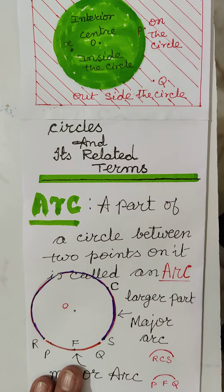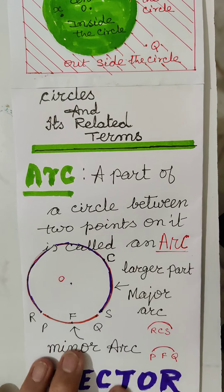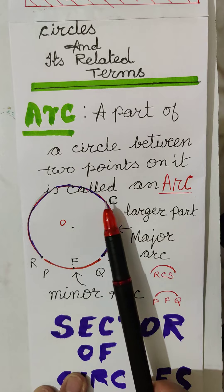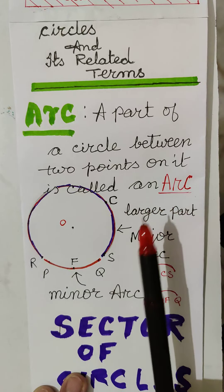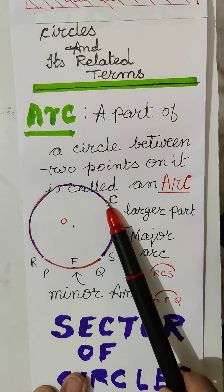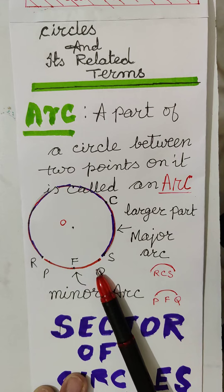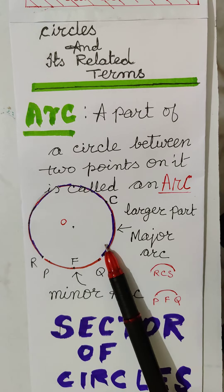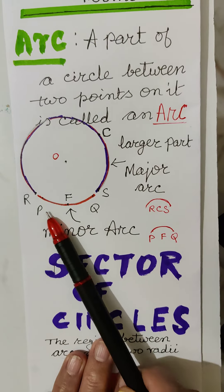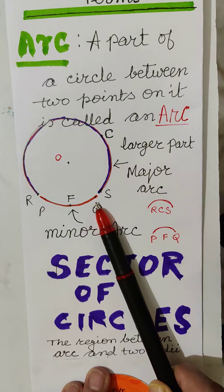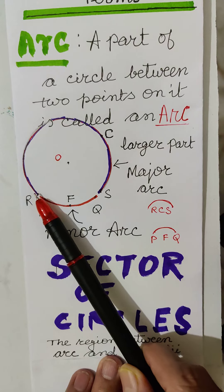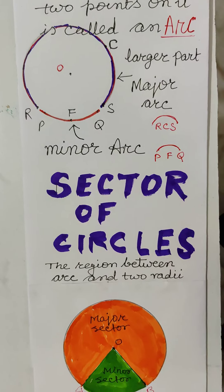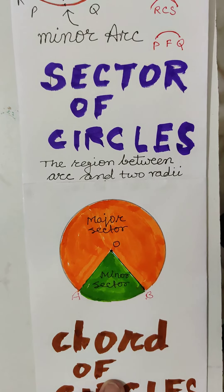Circle and its related terms. Arc: a part of a circle between two points is called an arc. There are two types of arc — the larger part is known as the major arc and the smaller part is known as the minor arc. PFQ is the minor arc whereas RCS is the major arc.